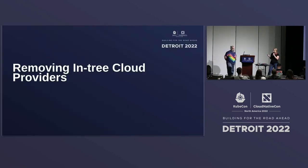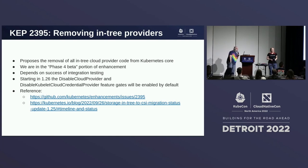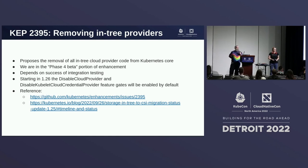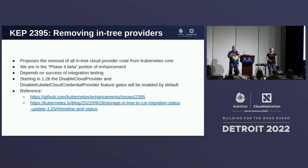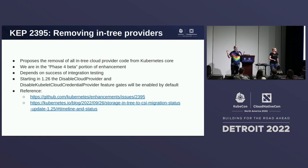So let's start with: hey, you thought you could use cloud providers — watch out, it's not going to be what you thought. Anyone who has been watching the great migration of in-tree to out-of-tree for our cloud providers might be familiar with KEP-2395. This KEP is the enhancement that proposes the removal of that code from the Kubernetes main repo and what's going to happen once we do that.